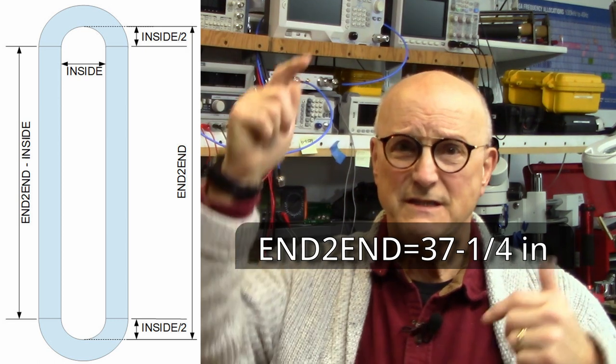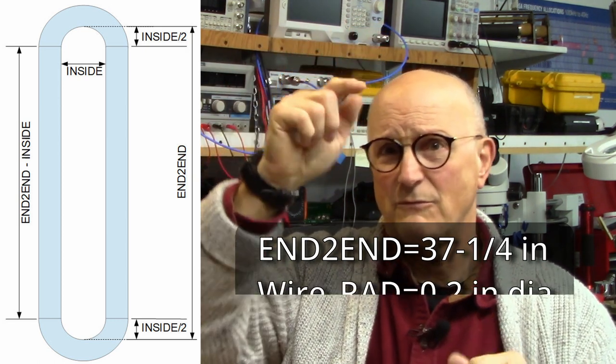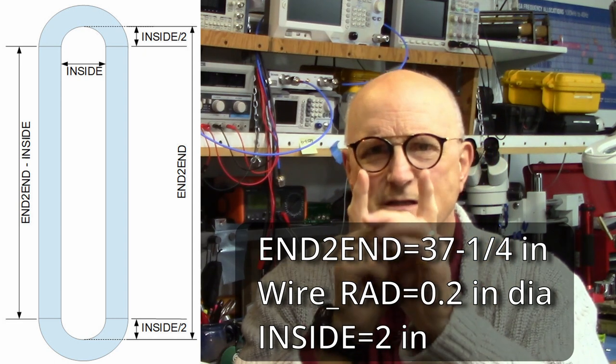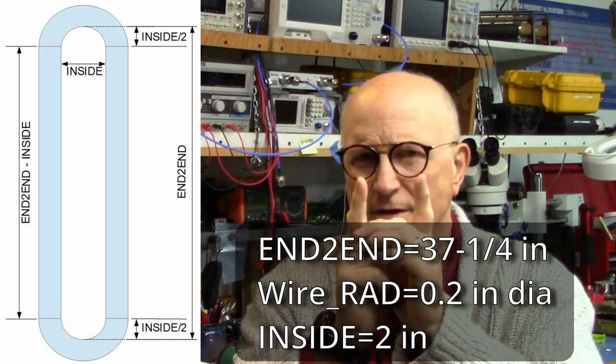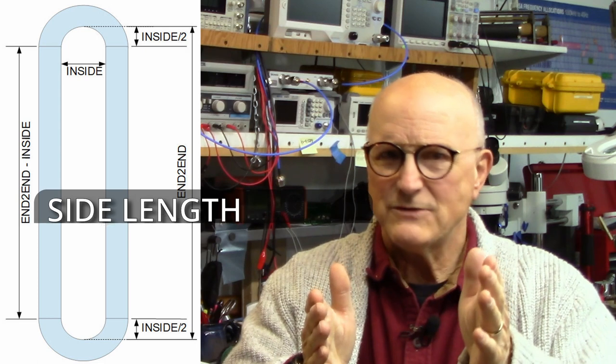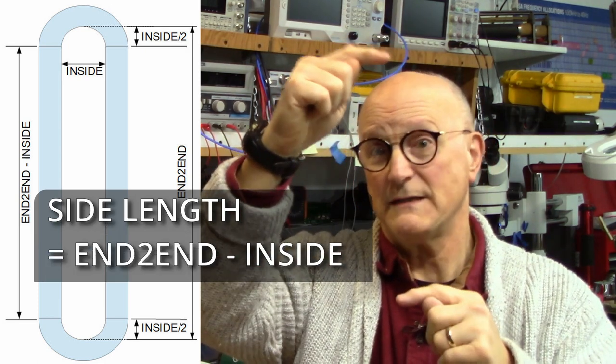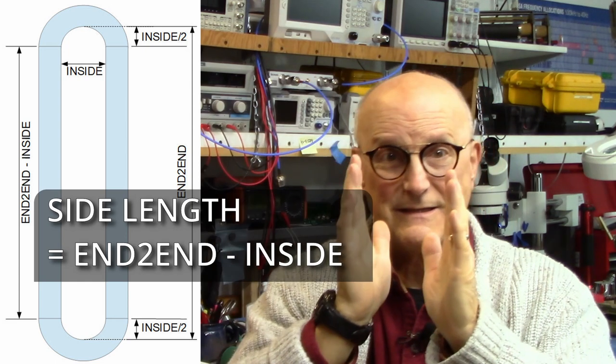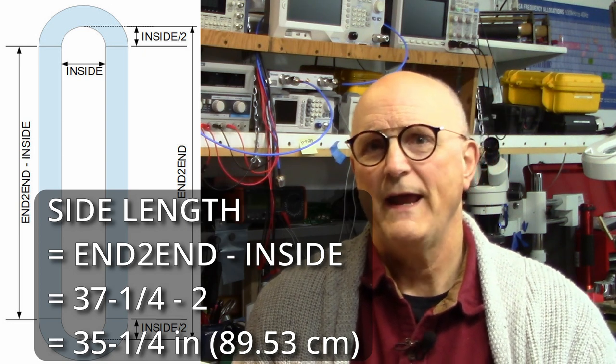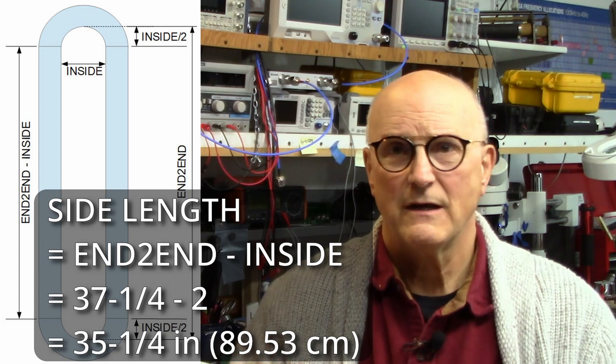First I had to figure out how long my wire had to be. So there is the requisite math. Now, working with the real numbers, it is 37 and 1 quarter inches tip to tip inside, remembering that the wire itself is 0.2 inches in diameter. It is 2 inches side to side inside, remembering again that the diameter of the wire is 0.2 inches. The straight sides will be the overall tip to tip inside length minus the side to side inside distance, which gives us a length of 35 and 1 quarter inches or 89.53 cm. I'm going to need 2 of these.